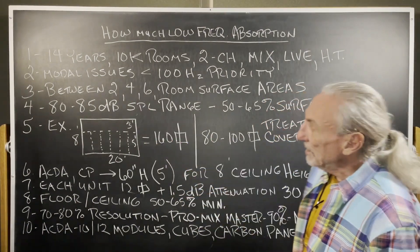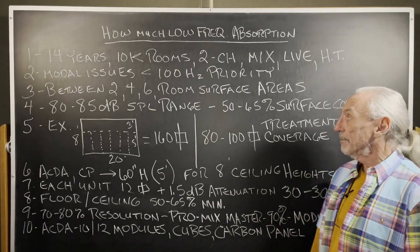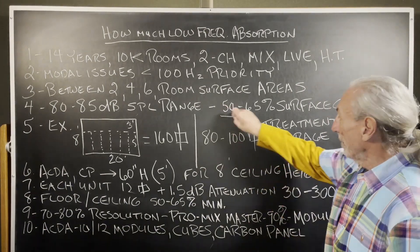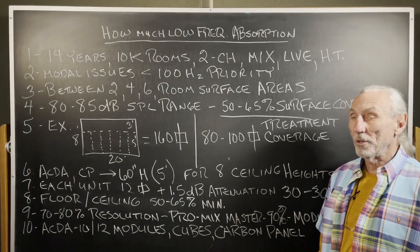We look for a design range 80 to 85 dB SPL. That's the pressure, how loud you play at in the room. And for that, you're going to need 50 to 65 percent surface area coverage for the low frequencies.